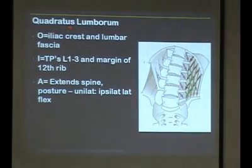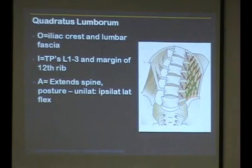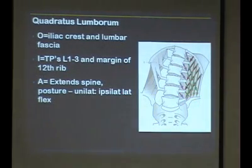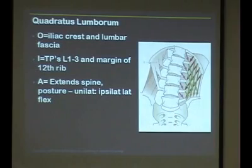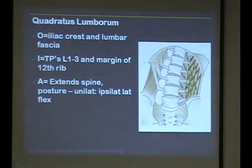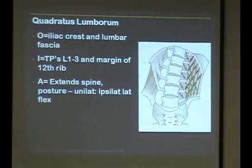This is all you really need to know: the quadratus lumborum comes off the iliac crest and the lumbar fascia, and then goes to the transverse processes and the bottom of the rib. For more detailed information, there are three different parts — some fibers run one direction, some run another, and some run straight up and down.